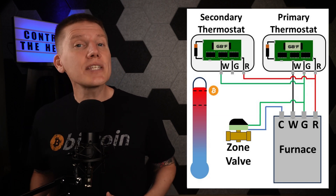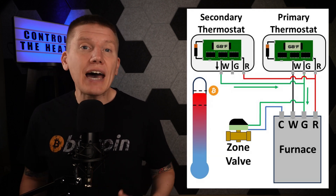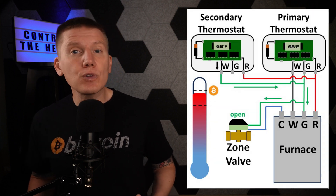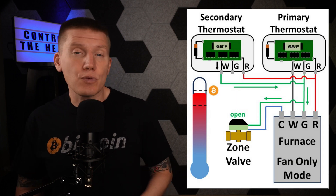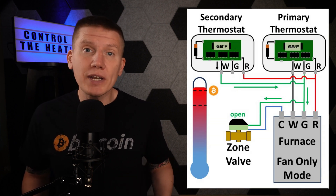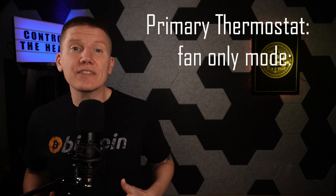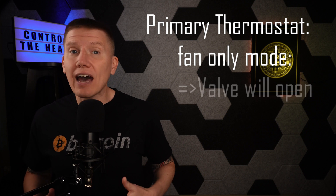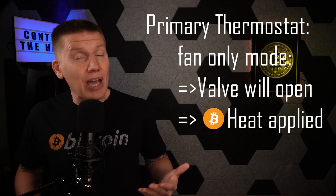When the temperature drops below the Bitcoin heating setpoint and activates the Bitcoin thermostat, the valve will open, allowing hot fluid to pass through the radiator while the furnace operates in fan-only mode, blowing heat through the house. When the temperature rises back above the Bitcoin thermostat setpoint, the valve will close, preventing any hot water from circulating through the radiator. One thing to be aware of with this setup: anytime the fan-only mode of the HVAC system is used, the valve will open — meaning you can't run the system in fan-only mode in the summer without adding heat.